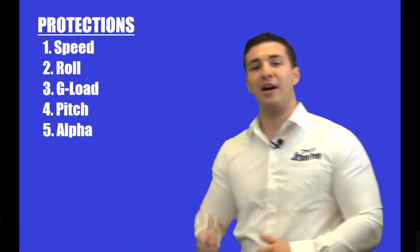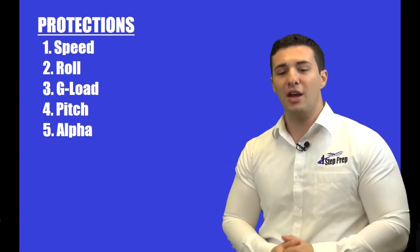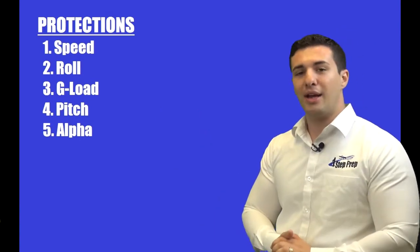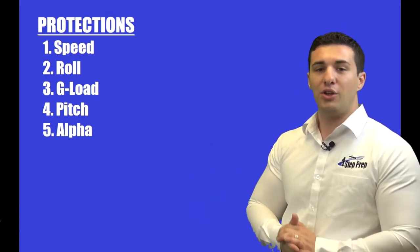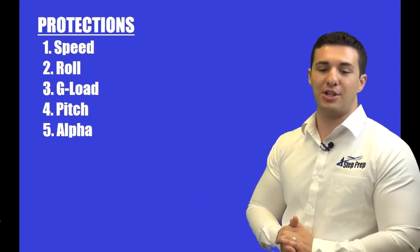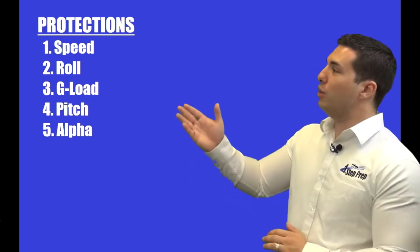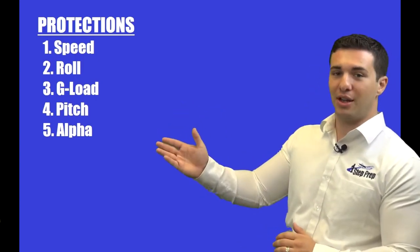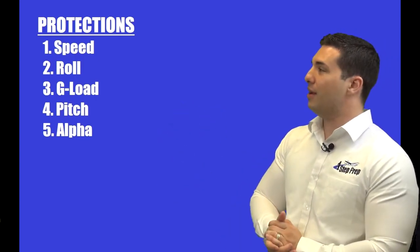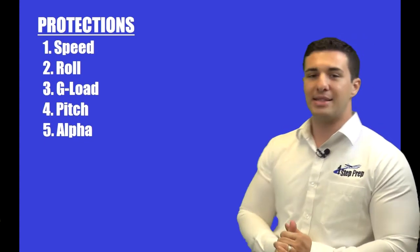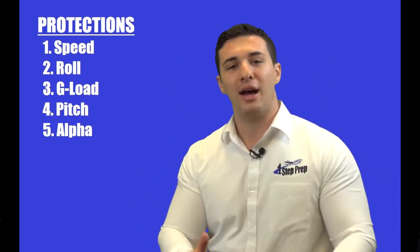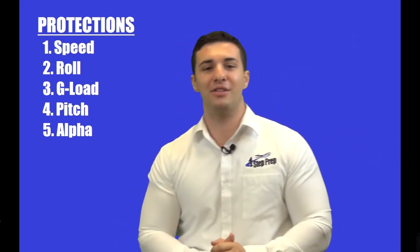So again you have five protections: it starts with speed, then roll protection, then g-load protection, pitch protection, and finally your alpha prot and alpha max — those alpha protections.